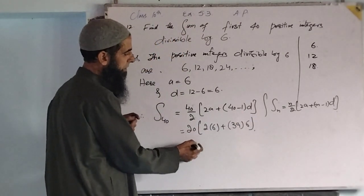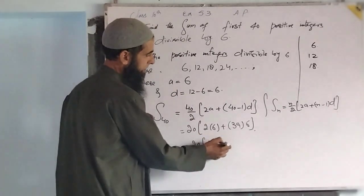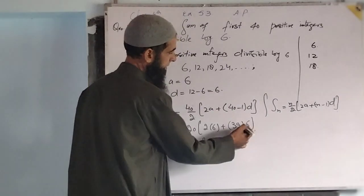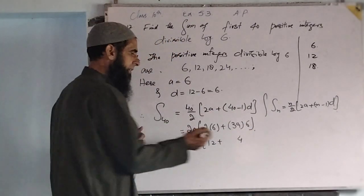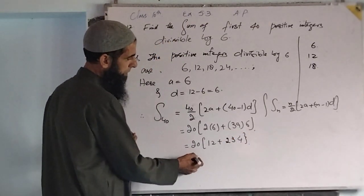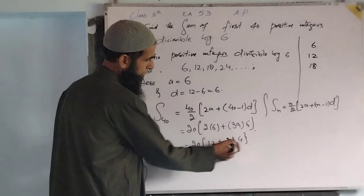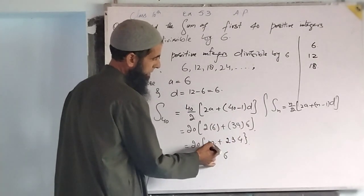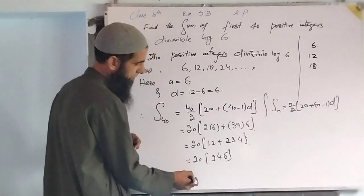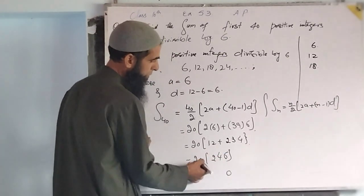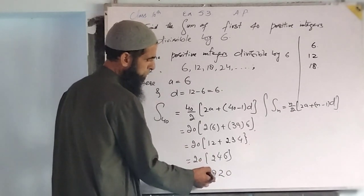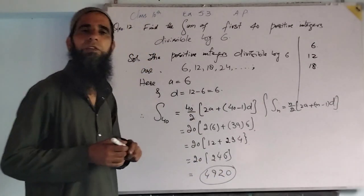Clearly we have it is 20 into 12 plus 39 into 6 is 234. This is equal to 20 into 12 plus 234 which is 246. That is 20 into 246, which is equal to - 0, 2 sixes are 12 carry 1, 2 fours are 8 plus 1 is 9, 2 twos are 4. This is the sum.